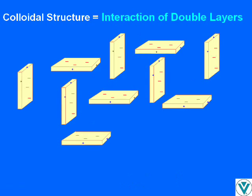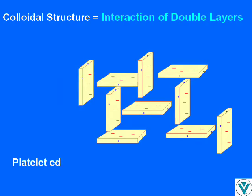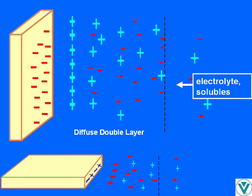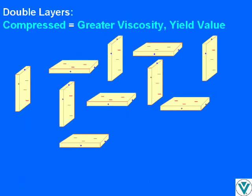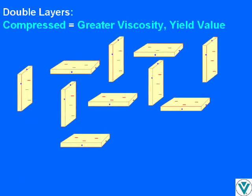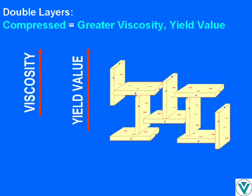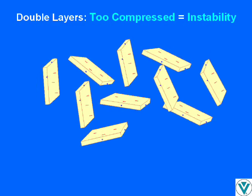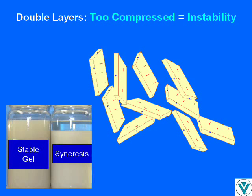The house of cards colloidal structure is actually based on the interaction of smectite platelet edge and face double layers. Platelet edges and faces do not actually touch. When electrolyte or other water soluble is added to the dispersion, the double layers are compressed. This allows the platelet edges and faces to approach more closely, resulting in a more rigid structure and consequently higher viscosity and yield value. If the double layers become too compressed, face-to-face van der Waals attraction will predominate and the house of cards colloidal structure will be lost. This may appear as a semi-stable thick gel or as flocculated masses with syneresis.